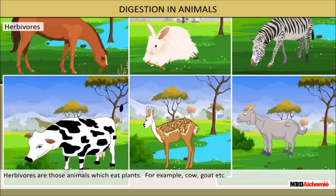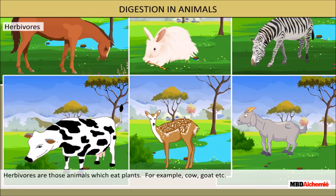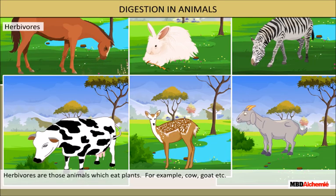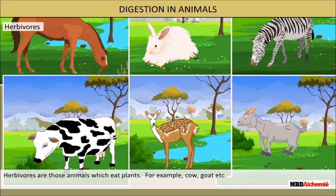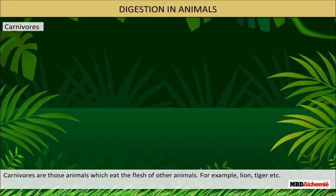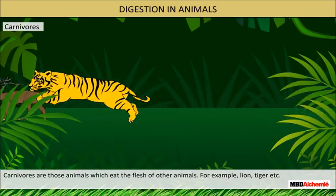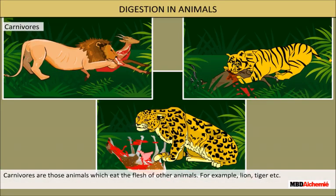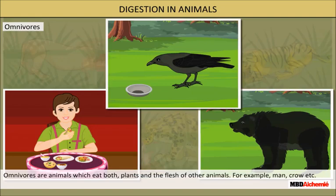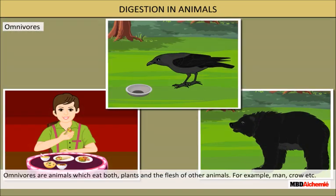Herbivores are those animals which eat plants, for example cow, goat, etc. Carnivores are those animals which eat the flesh of other animals, for example lion, tiger, etc. Omnivores are those animals which eat both plants and the flesh of other animals, for example man, crow, etc.